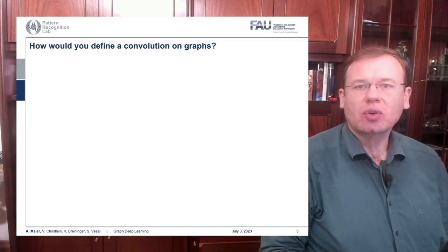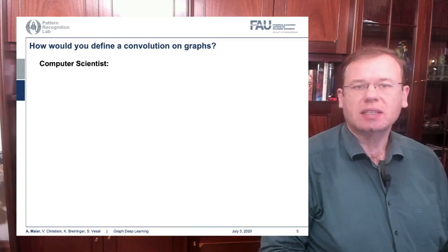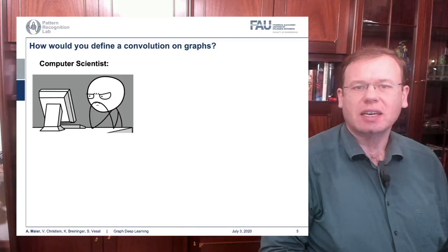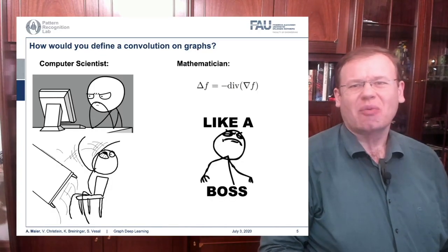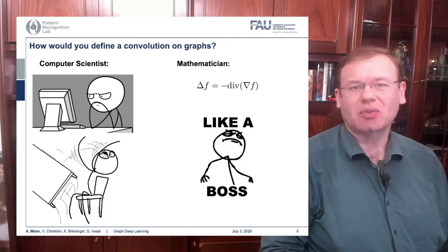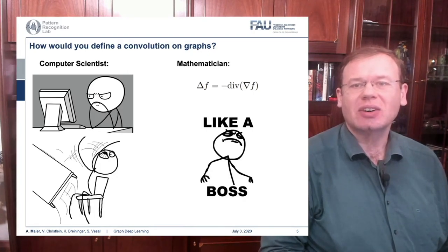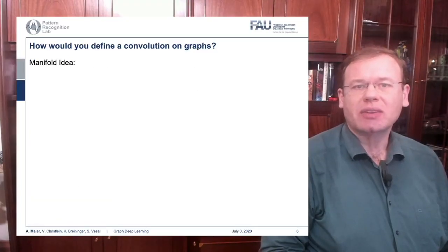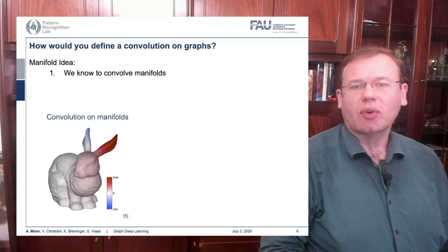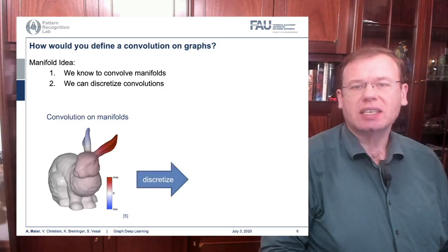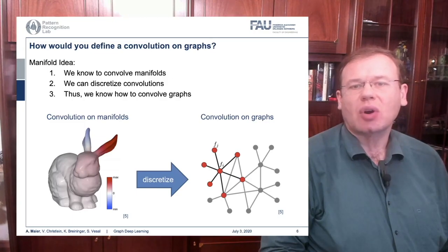So how would you define a convolution on graphs? The computer scientist thinks really hard — but what the heck? The mathematician knows that we can use Laplace transforms in order to describe convolutions, and therefore we look into the Laplacian, given here as the divergence of the gradients. That was my 1987 diploma thesis, all about that. This brings us to the manifold idea: we know how to convolve manifolds, we can discretize convolutions, and this means we know how to convolve graphs.